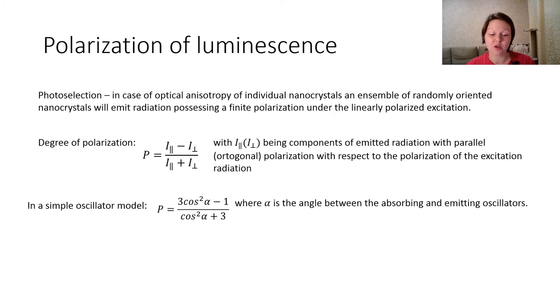In case of optical anisotropy of individual nanocrystals, an ensemble of randomly oriented nanocrystals will emit radiation possessing a finite polarization under linearly polarized excitation. This process is called photoselection. This ensemble of nanoparticles under consideration is macroscopically isotropic because of the randomly oriented particles. The photoselection process is characterized by the degree of polarization. In a simple oscillating model, the degree of polarization can be rewritten where alpha is the angle between the absorbent and emitting oscillators.